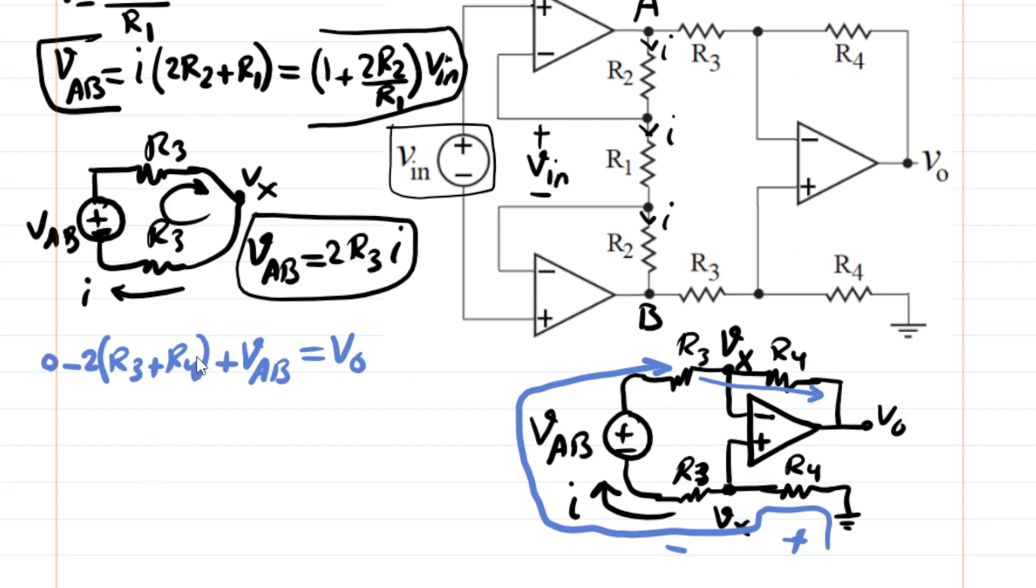OK, then I, oh, I forgot to multiply this by I. So the current I is flowing through these resistors. OK, now the nice thing is I have I as a function of VAB here. So let's do that. I'm going to substitute I with what I have here. So therefore, I can write V out is, when I substitute, I is VAB divided by 2R3. So you get 2 times R3 plus R4 divided by 2R3 VAB.